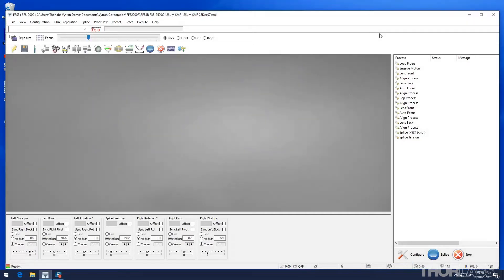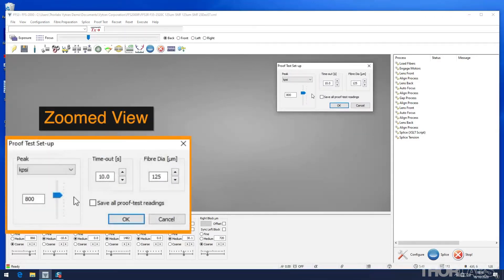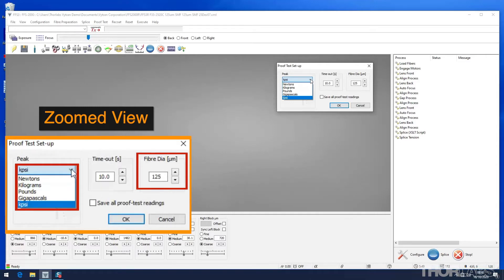The proof test parameters can be set in the software by either selecting proof test from the upper menu items or right clicking on the proof test icon in the main toolbar. A variety of units can be selected for the proof test measurement. If KPSI or Giga Pascal are selected, it is important that the fibre diameter corresponds to the fibre being tested.